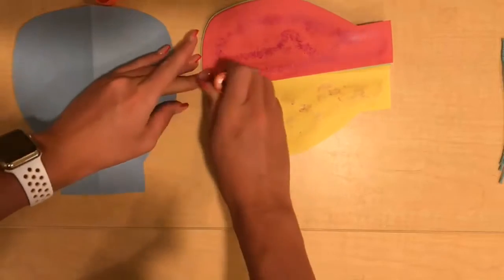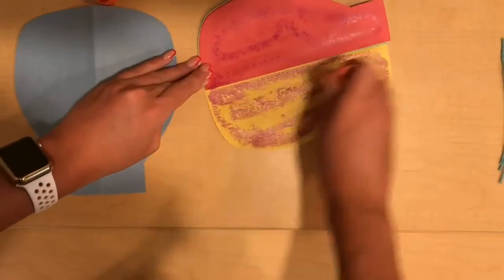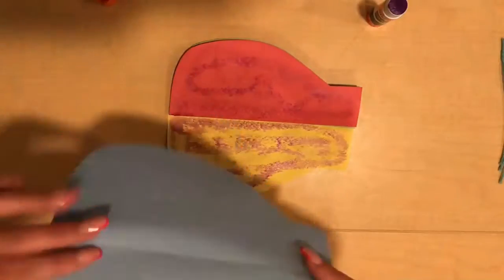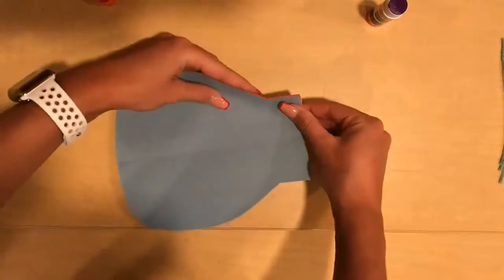Feel free to add as much glue as you would like to each side of the construction paper so that each piece of paper will stick together for the hot air balloon.